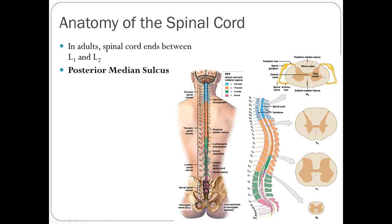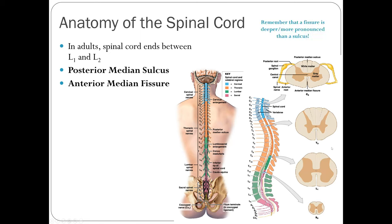Looking at a cross-section of the spinal cord, the posterior part has a small groove called the posterior median sulcus, on the dorsal side. On the anterior side, we have a much deeper groove called the anterior median fissure. You can orient yourself by looking for this deep fissure, knowing it marks the anterior side. Fissures are deeper and more pronounced than sulci.